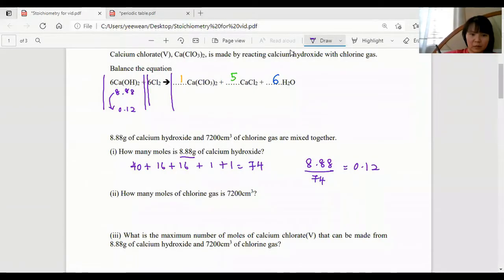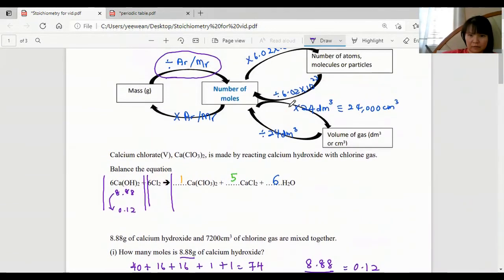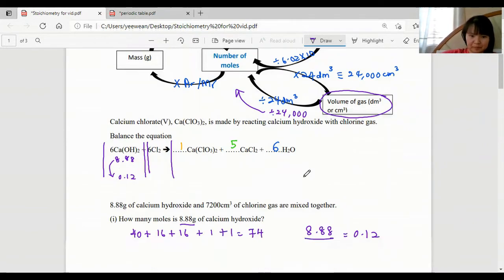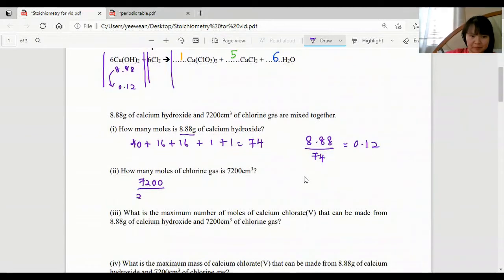Next, let's get the moles of chlorine gas, 7200 centimeter cubes. If we need to go back to number of moles, we need to divide by 24,000. Then we'll get 0.3 moles.